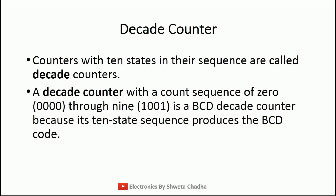Next is a decade counter. A decade counter is a type of truncated counter. Truncated means that the modulus is not the maximum — we have cut the counter outputs in between. Decade means 10, so a counter which counts 10 states is known as a decade counter. It counts from 0000 to 1001, that is from 0 to 9. This is also known as BCD code because BCD is allowed from 0 to 9 in the binary number system.